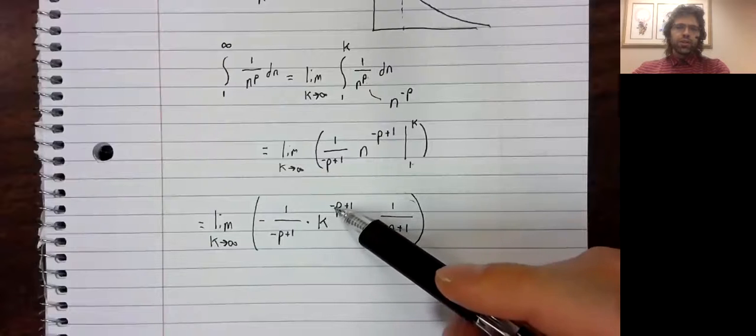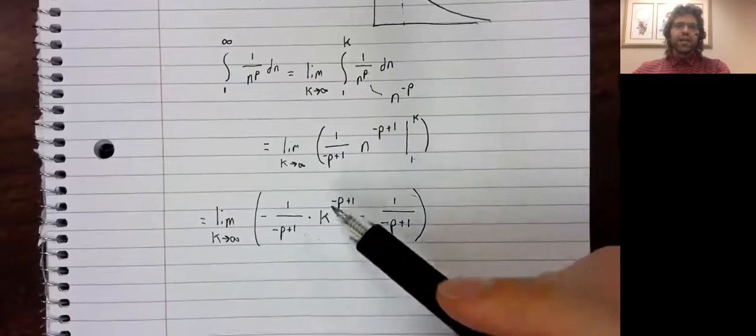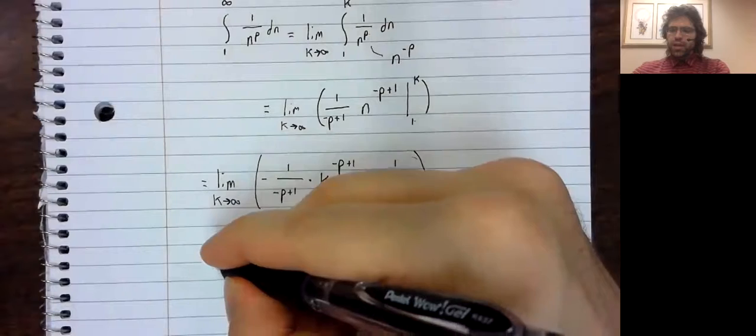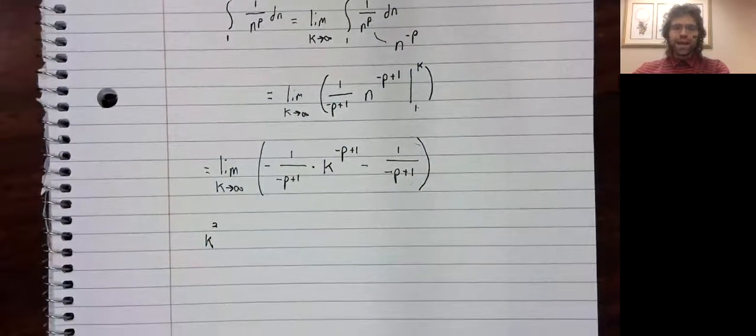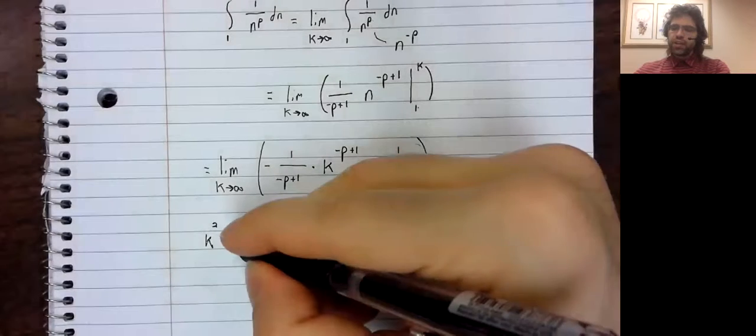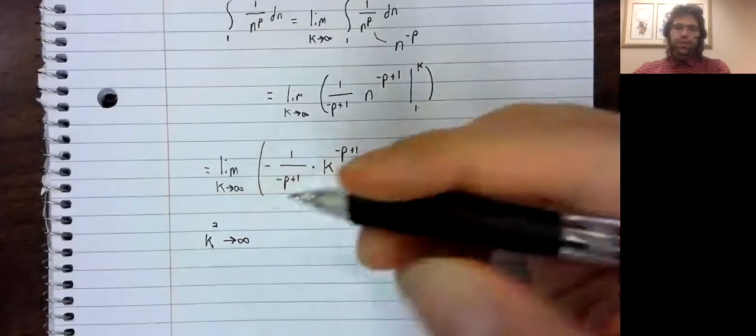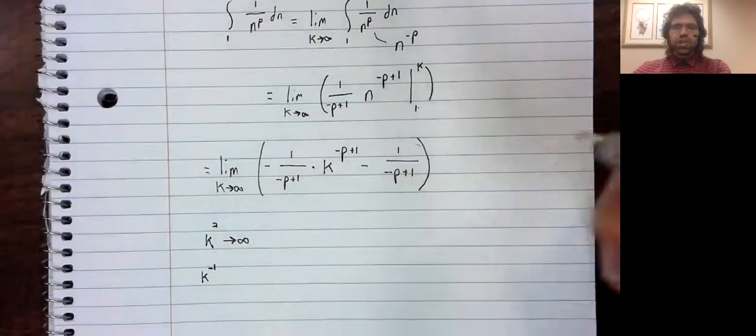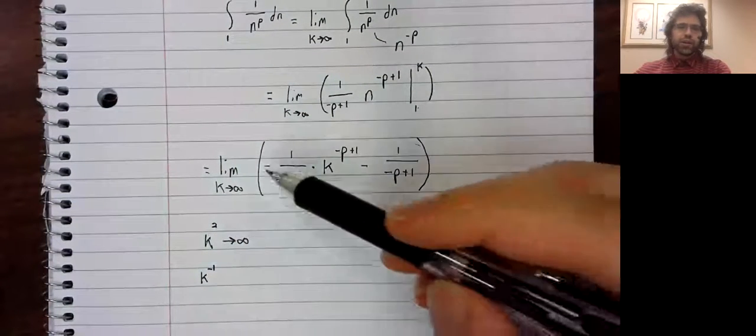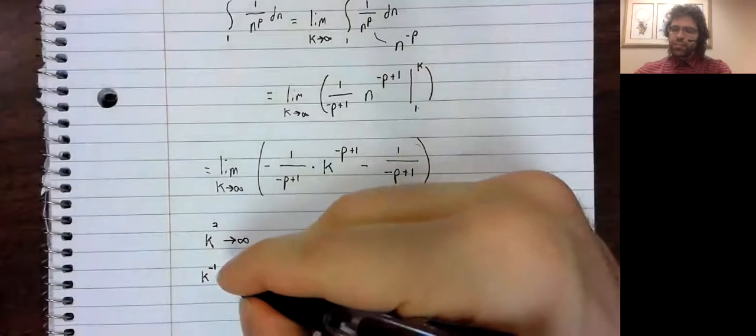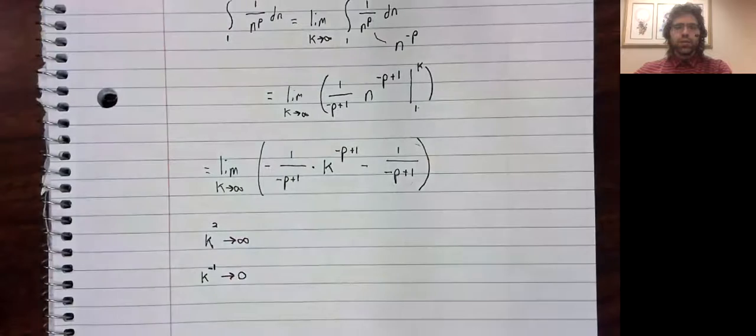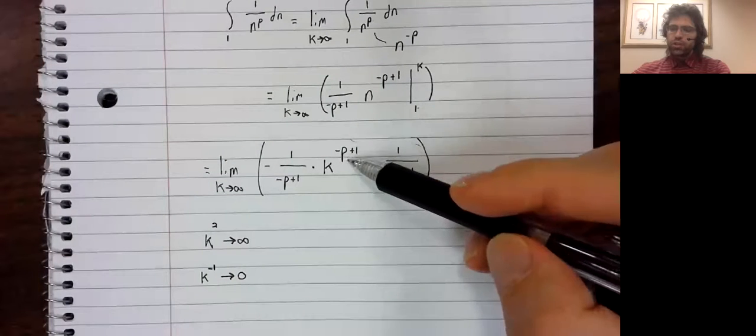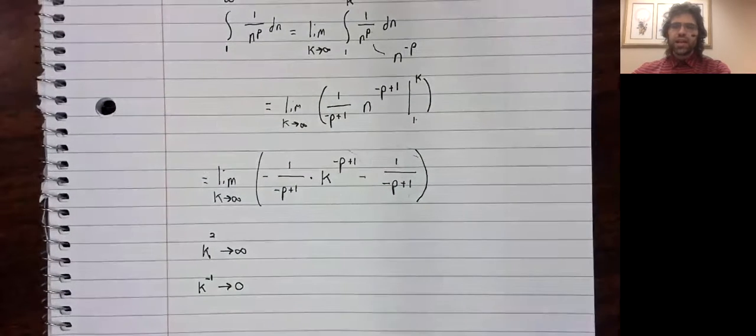What's going to matter is this power. As K goes to infinity, what happens? Well, if you have something like K squared and let K go to infinity, K squared also goes to infinity. If you have something like K to the negative one and let K go to infinity, K to the negative one would go to zero. So this power determines whether this limit is finite or infinite.